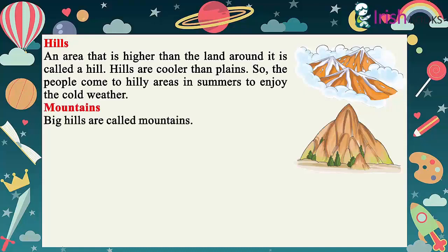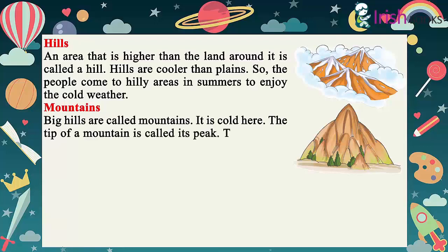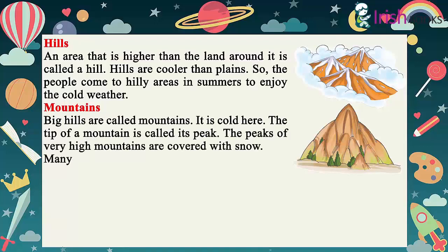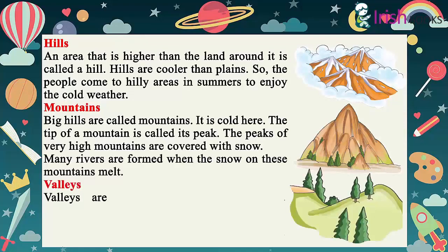Big hills are called mountains. It is cold here. The tip of a mountain is called its peak. The peaks of very high mountains are covered with snow. Many rivers are formed when the snow on these mountains melts.